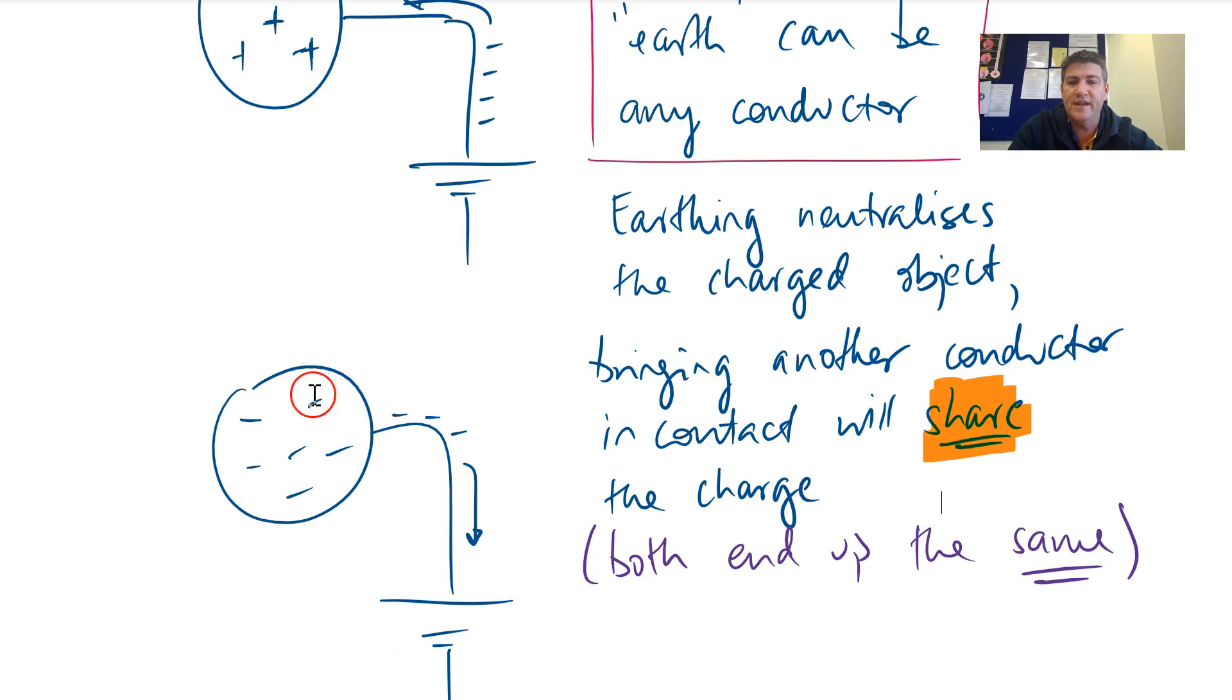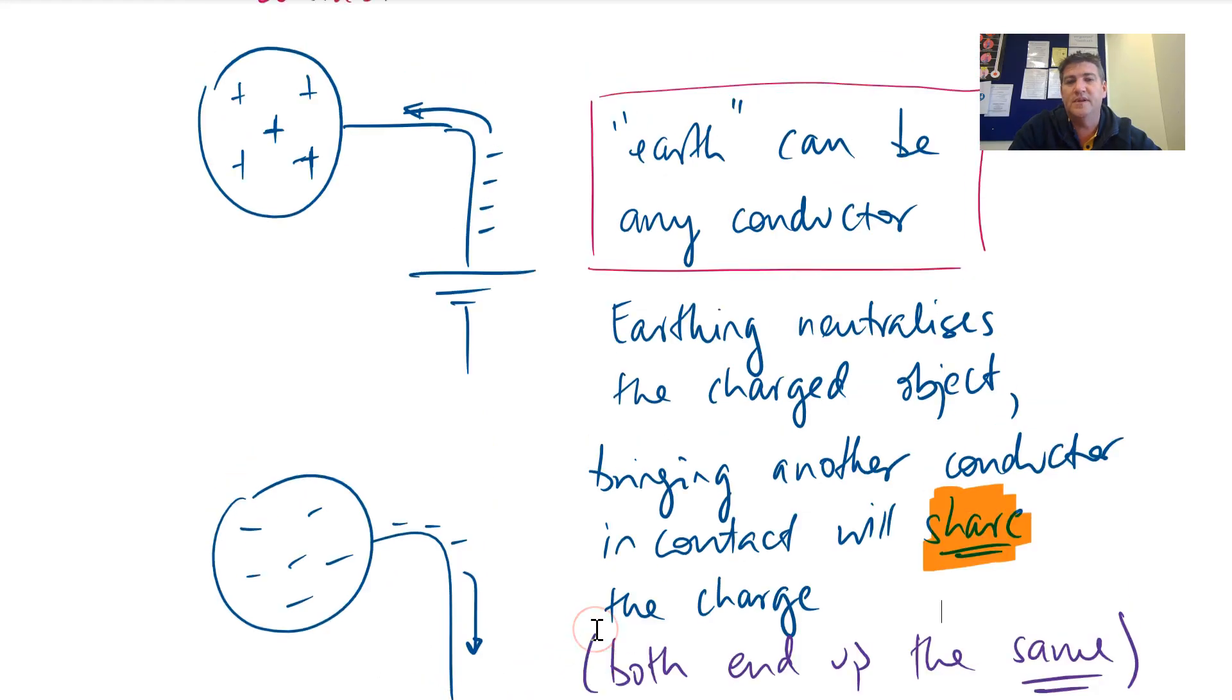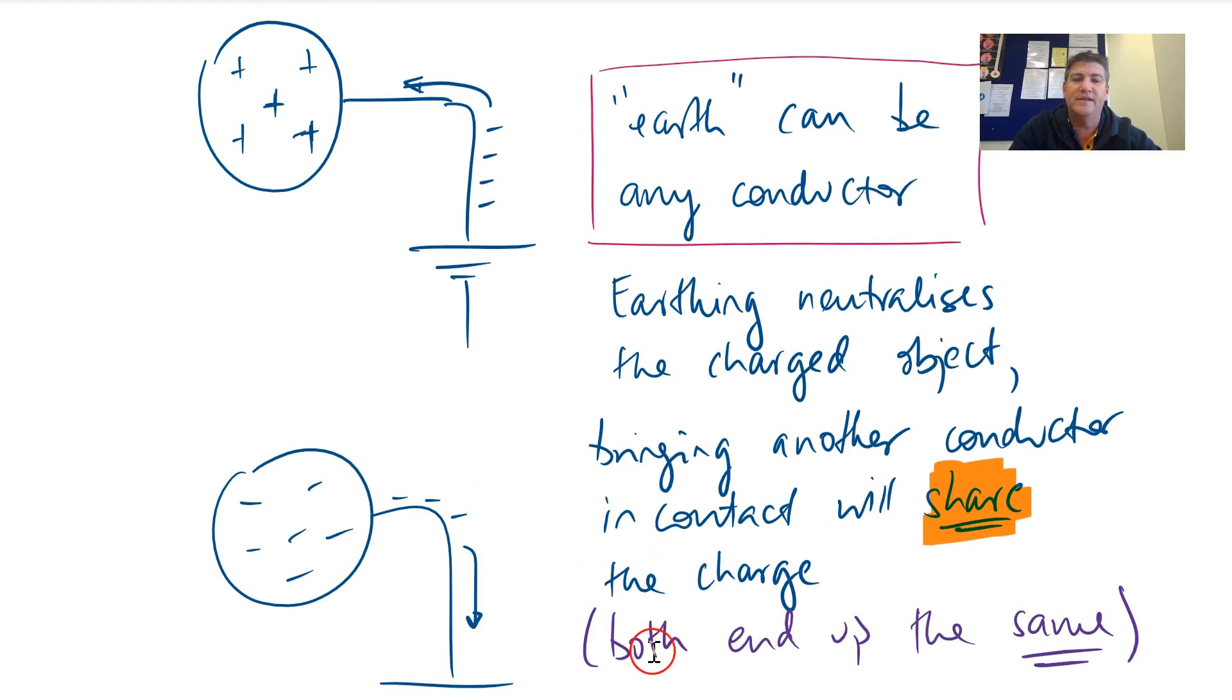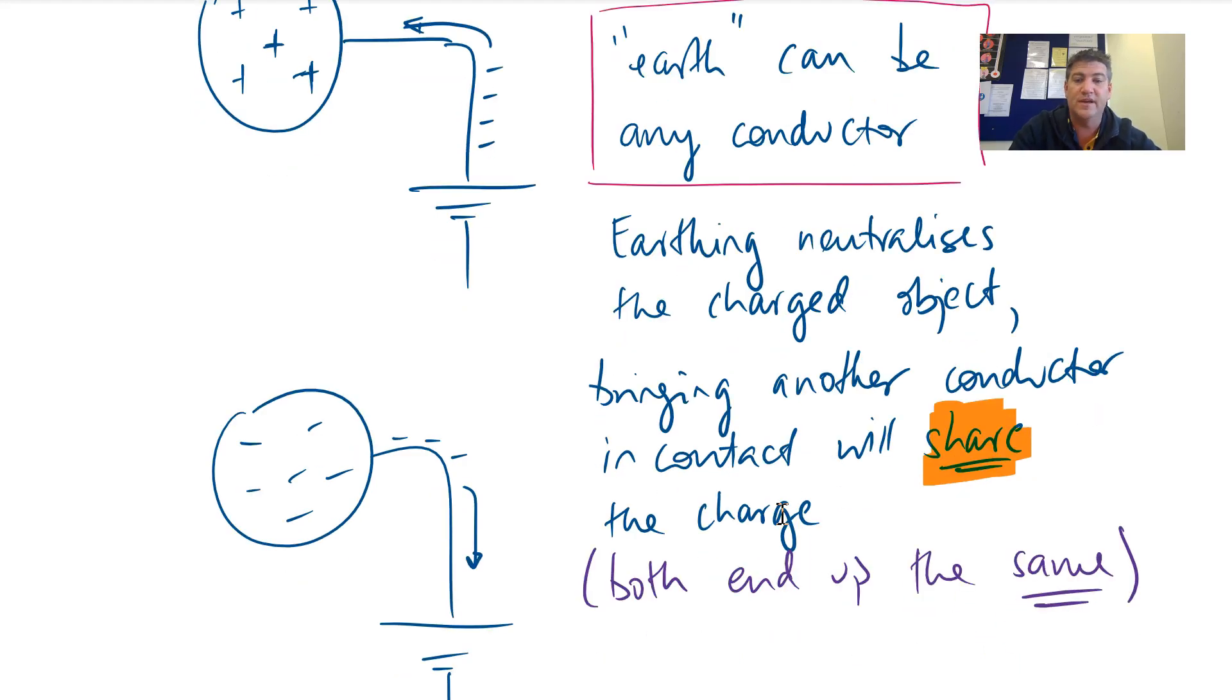Similarly, if we have a negatively charged object, it will push negative charge out of it. So in this case here we've got a charged spherical object again, and it's pushing excess electrons down into Earth or into the other conductor. It needs to be noted that both objects, when you're using charging by conduction, end up with the same charge. They just kind of share whatever the original excess charge was.